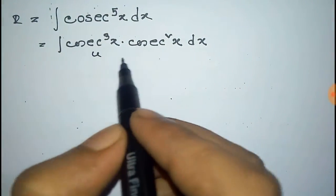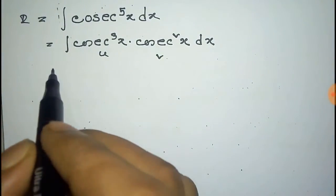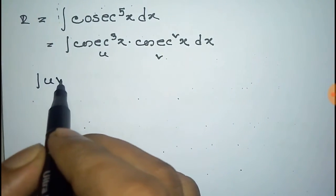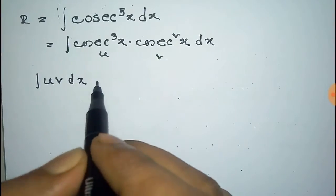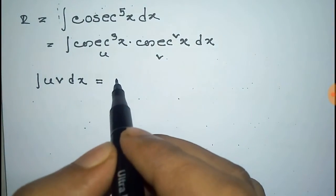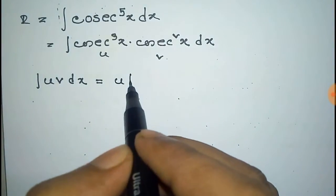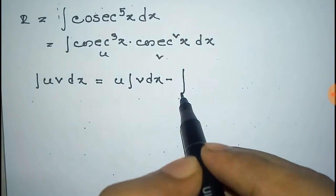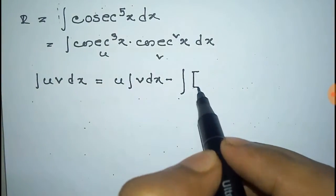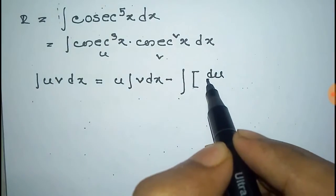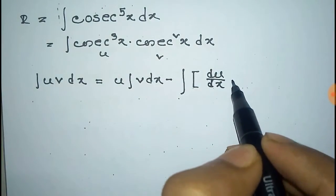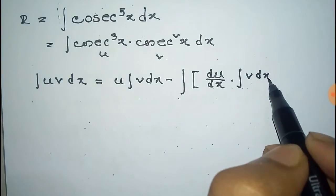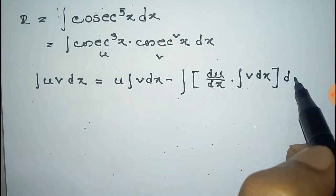We take cosec cube x as u and cosec square x as v. We use the formula for integration by parts: the integration of u·v equals u times the integration of v minus the total integration of the derivative of u times the integration of v, into dx.